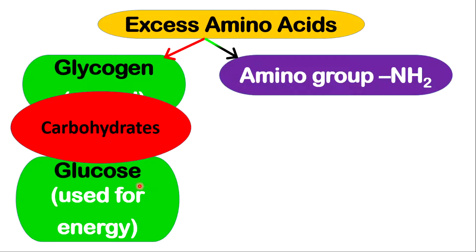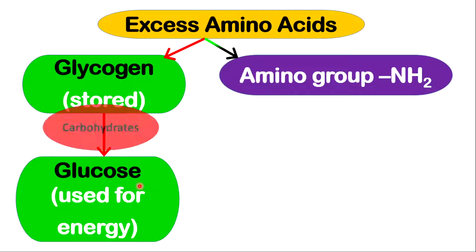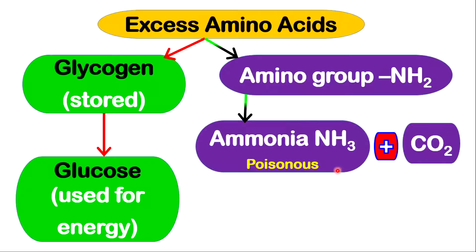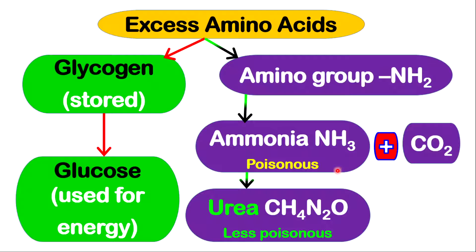The amino group will be converted to ammonia. Ammonia is very poisonous; however, the body will get rid of it by reacting ammonia with carbon dioxide. Once this reaction is completed, the product will be urea, which is less poisonous. The urea can then be excreted from the body.